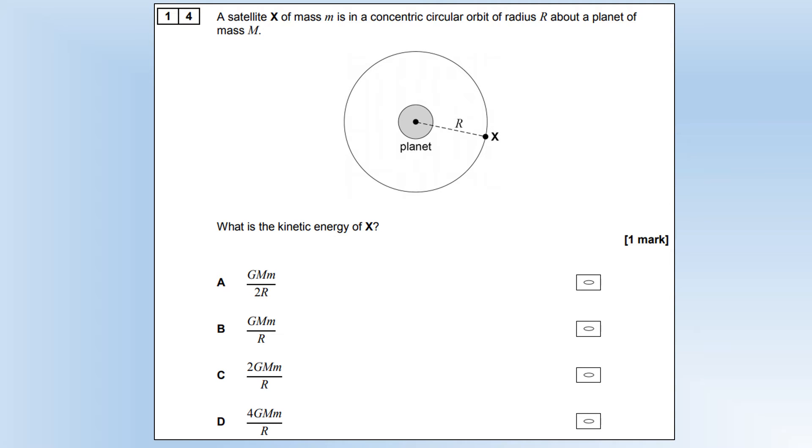A satellite X of mass M is in a concentric circular orbit of radius R about a planet of mass M. What is the kinetic energy? If it's in a circular motion, we can equate Newton's law of gravitation with a centripetal force. We can then cancel some Rs, then divide both sides by 2. We've got an expression for kinetic energy, which is clearly option A.